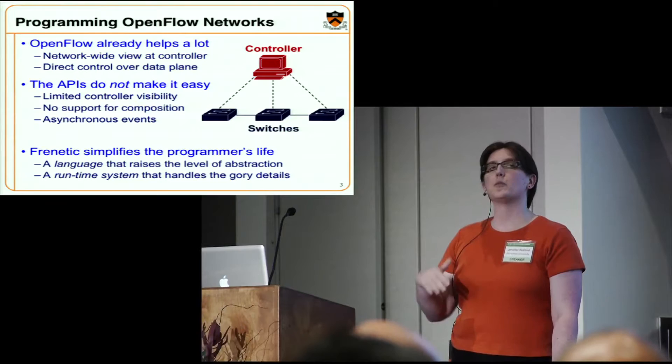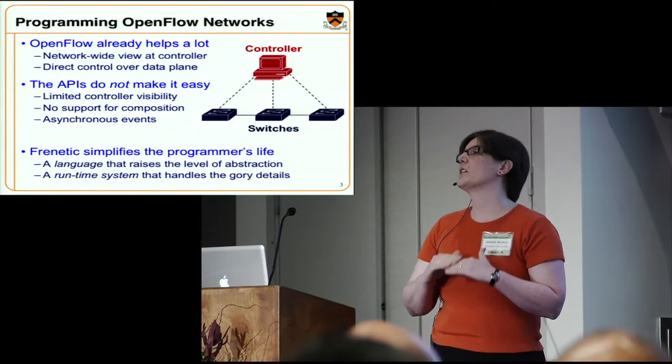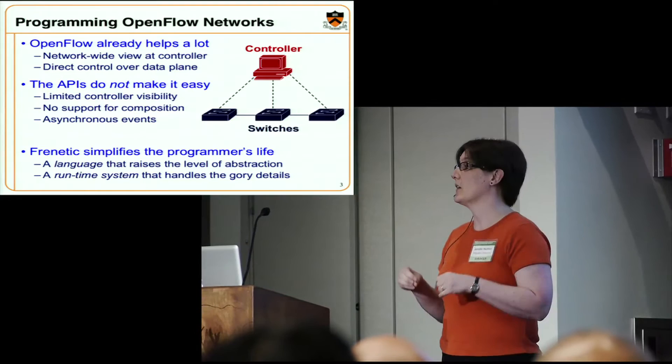I'm going to talk about three limitations of the existing API. They're very natural limitations because what's there now is intentionally designed to be a fairly thin veneer on top of the capabilities of the underlying hardware. That makes it difficult for the controller to have full visibility — it does have a network-wide view, but an incomplete one, intentionally, because we don't want it to see everything going on in the network since it wouldn't scale.